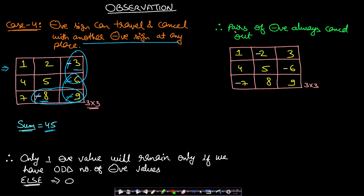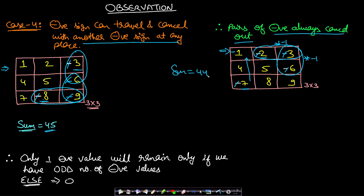Therefore, pairs of negatives always cancel out regardless of where they are in the matrix. In a 3×3 matrix with three negatives, we can make a pair cancel: multiply -2 and 3 by minus 1 so the negative moves to -3, then pick -3 and -6 and multiply by minus 1 to remove that negative. Now only one negative remains — we move it to the smallest element (1). The sum from 2 to 9 is 44, subtract 1, giving 43.